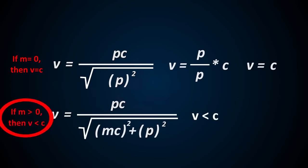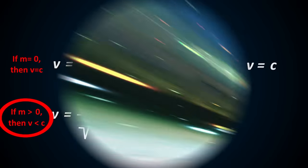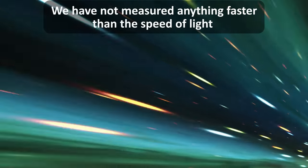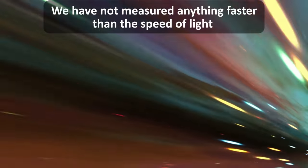Now, it could be that the velocity of the photon is in fact not c, the maximum velocity, but something less than that. But since we have not measured anything faster, we presume that the speed of light is the maximum velocity. But is that really the case? Well, we don't really know.